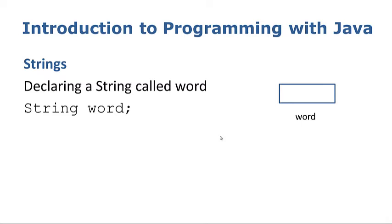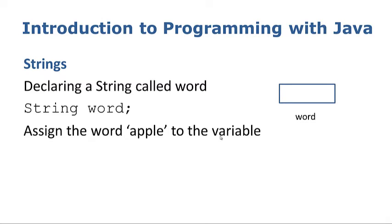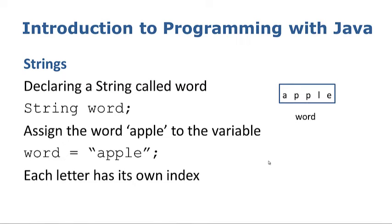If we look at that in a little more detail, let's assign the word apple to the variable. We say word equals "apple" and again you will note here the double quotes as opposed to the single quotes we saw with the character earlier. That basically puts the word apple into the string. Now what we haven't looked at in any great detail to date is the fact that each letter in a string gets its own index.